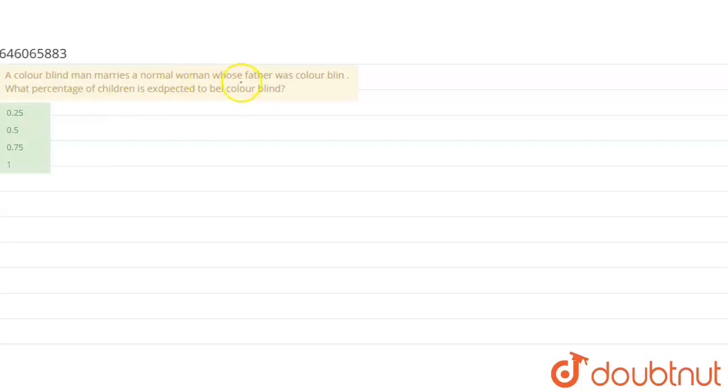What percentage of children is expected to be colorblind? The options are 0.25, 0.5, 0.75, or 1. So basically, let's work through this problem.